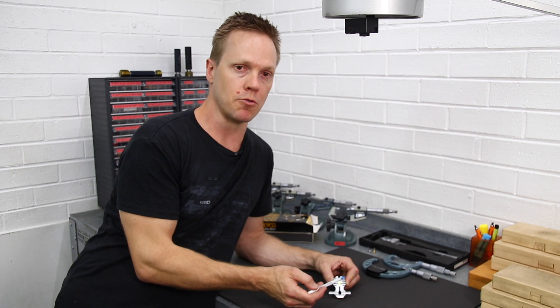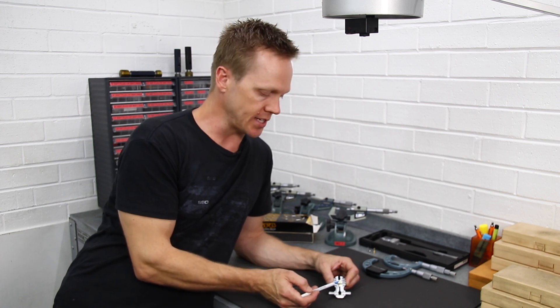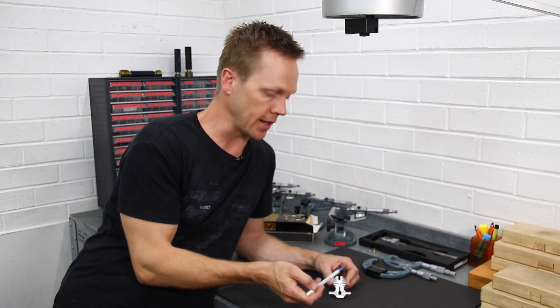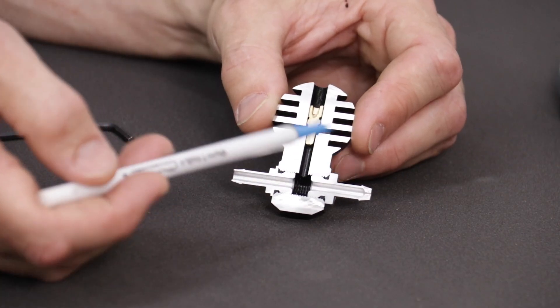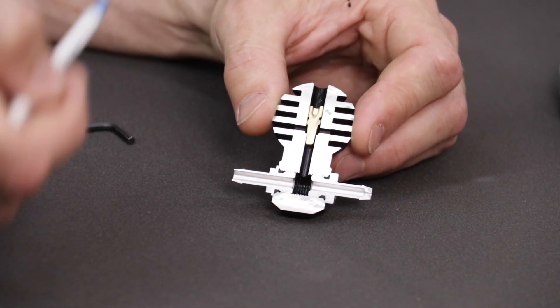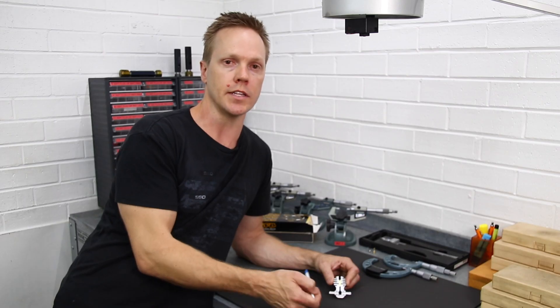Now the diameter of the restrictor hole is quite important. It changes how sensitive the adjustment screw is and it can also change the spool rate of the turbo. If you make this hole too small, what can happen is it delays the signal that gets to the wastegate actuator which can lead to boost spiking.